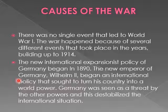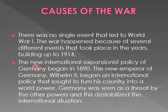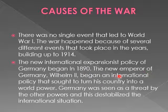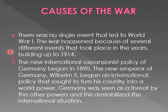There was no single event that led to World War 1. The war happened because of several different events that took place in the years building up to 1914. The new International Expansionist Policy of Germany began in the 1890s. The new Emperor of Germany, Wilhelm II, began an international policy that sought to turn his country into a world power. Germany was seen as a threat by other powers, destabilizing the international situation.